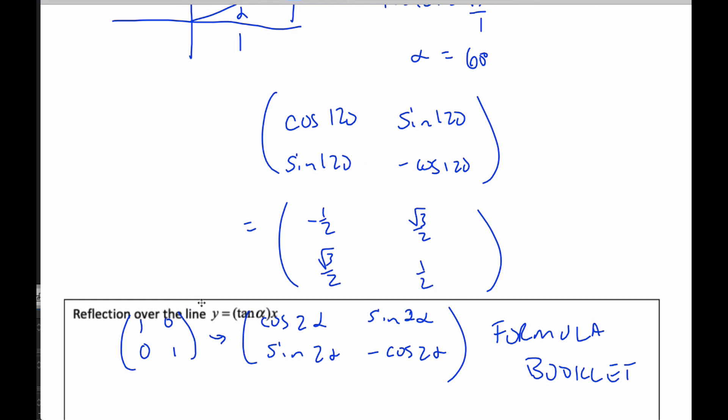So to generalize, if I'm going to reflect over the line y equals tangent alpha, this is the generalization of that, and you can just use it to multiply the points by.